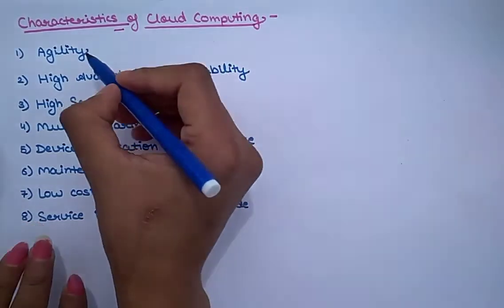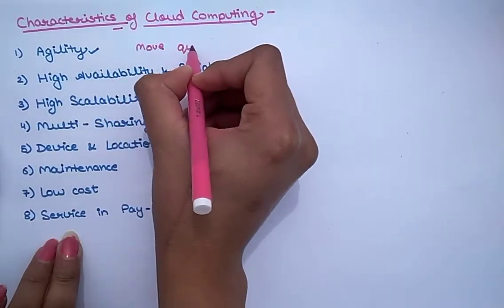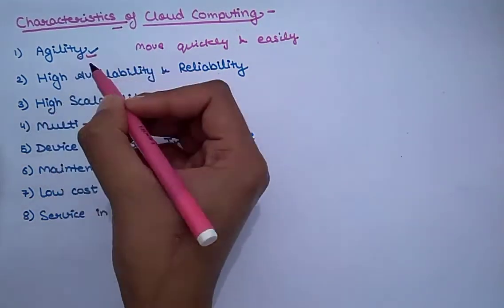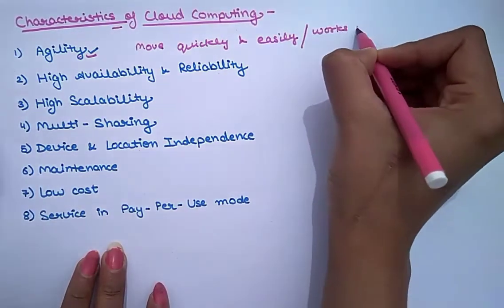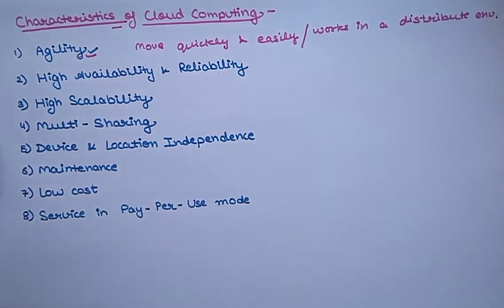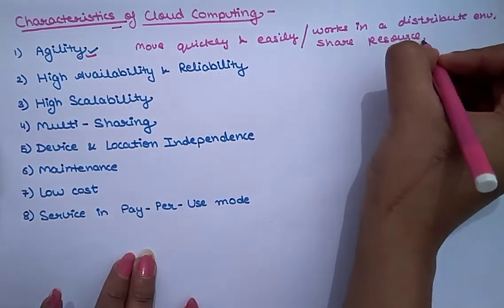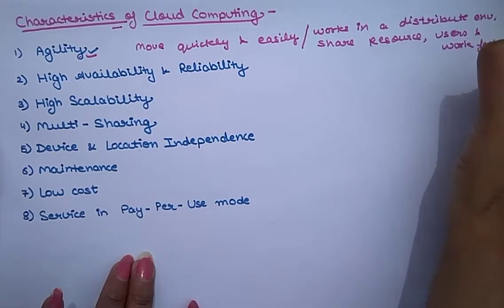At first we have agility. The basic meaning of agility is to move quickly and easily. But in case of cloud computing, agility means the cloud works in a distributed environment and it is used to share resources among users and works very fast.